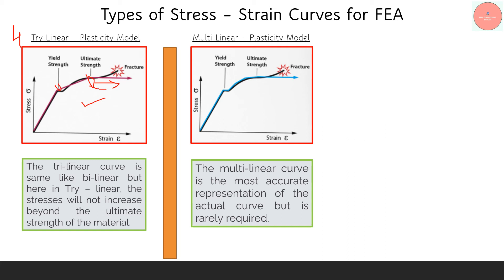The fifth type is the multi-linear plasticity model. For each point the material curve changes, making it more like the engineering stress-strain curve, which is a very accurate representation. However, we rarely use this type because standardized material property data is not always available for all materials. But if you do have this kind of plasticity data, the solution will be more accurate with respect to the actual scenario.